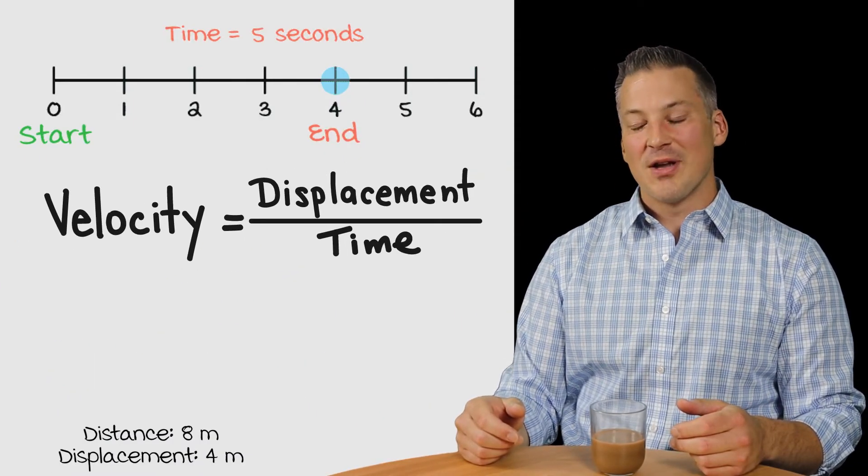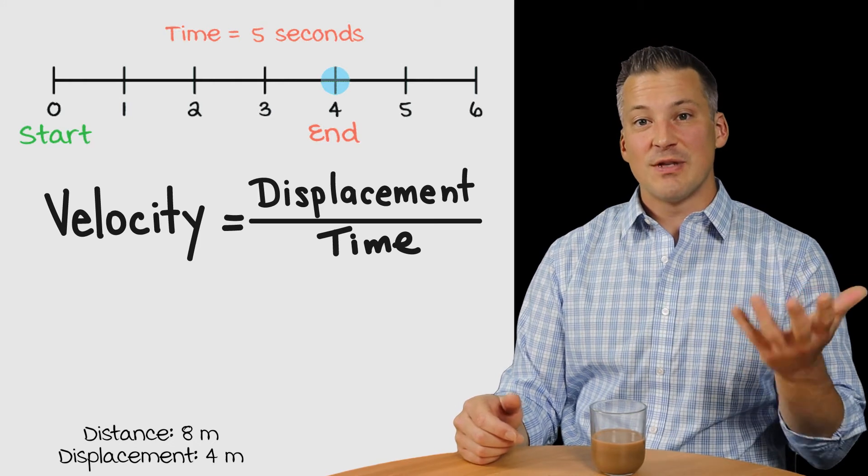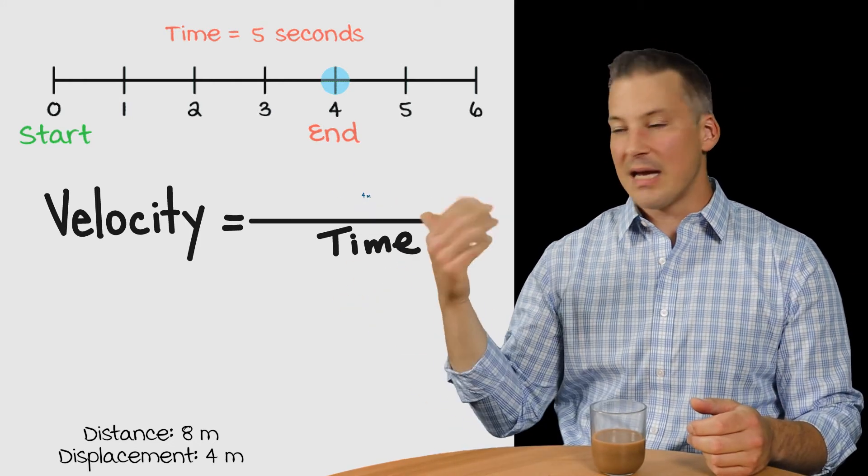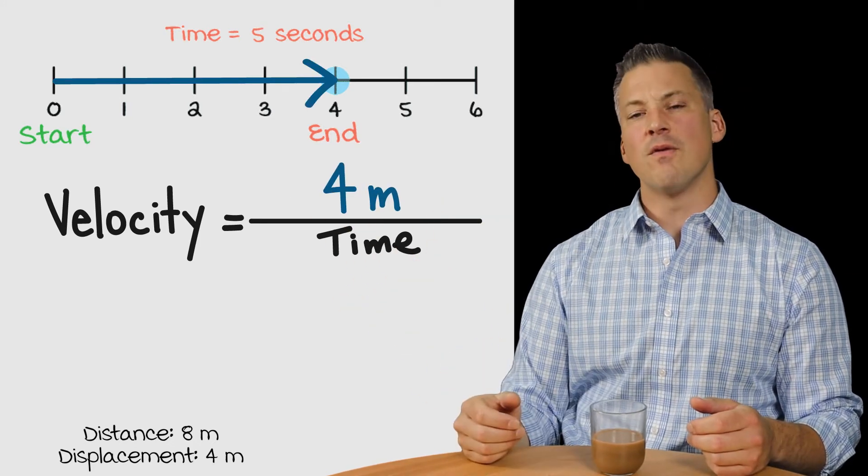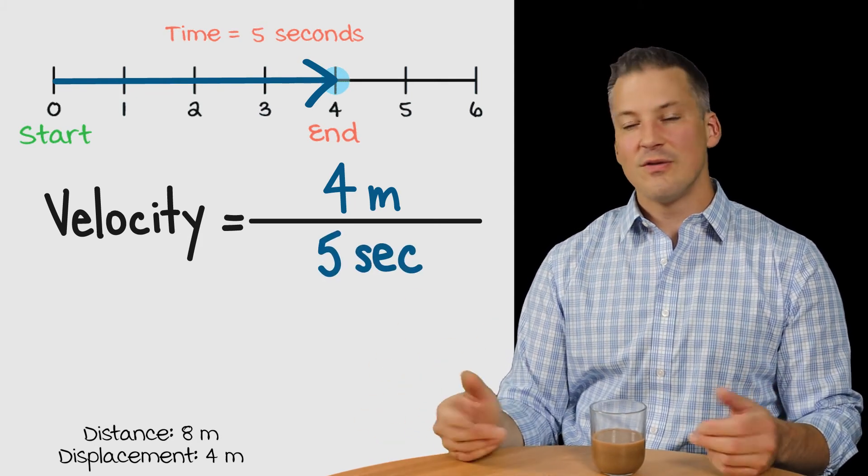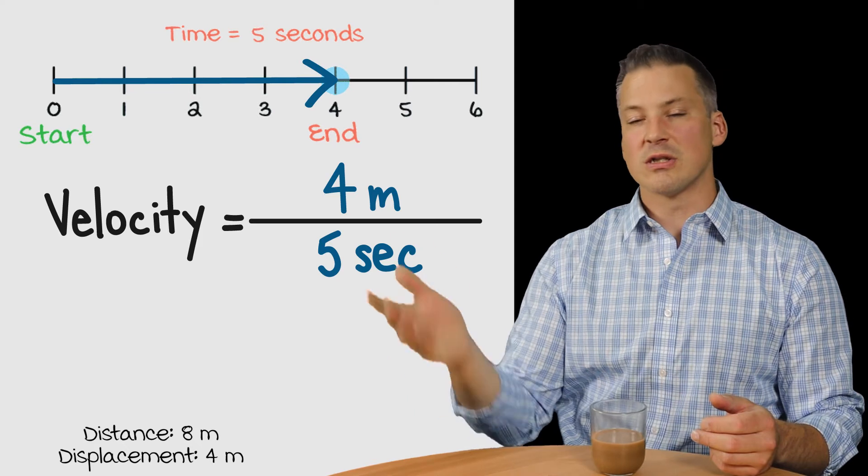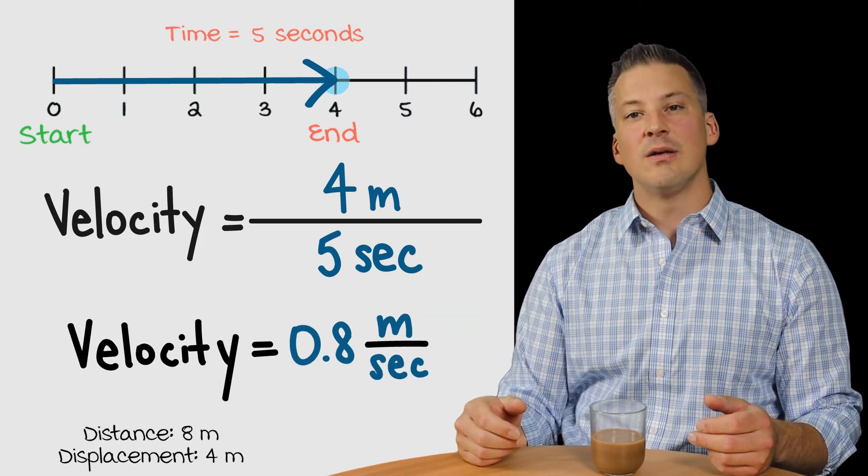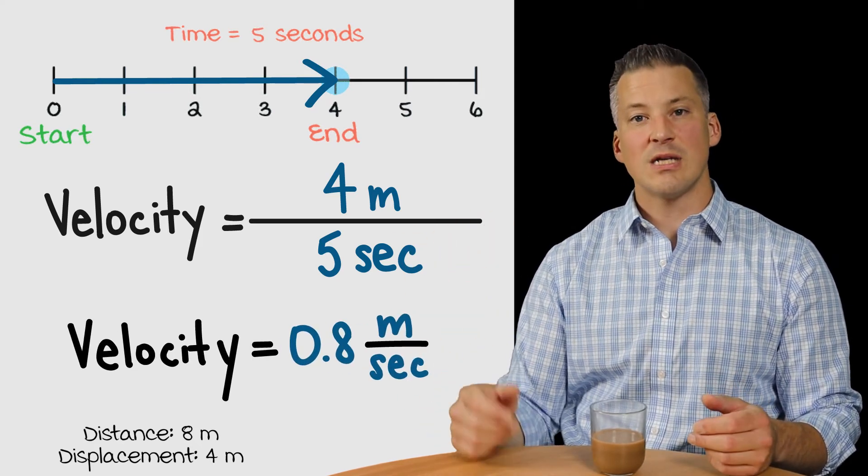How about the velocity? So, the velocity now is the displacement divided by the time. So, what's the displacement? Again, it's 4. We calculated that before. And then, what's the time? 5 seconds. So, we do 4 divided by 5. What does that work out to? That works out to about 0.8. So, it's about 0.8 meters per second. That's the velocity.